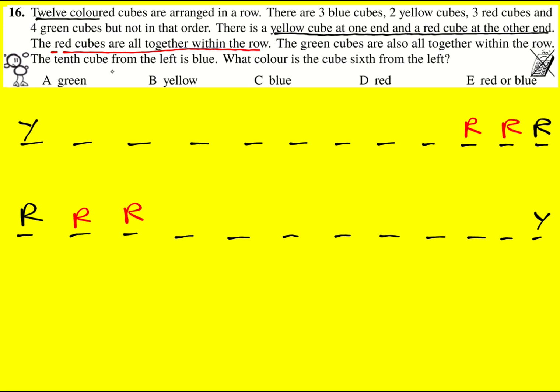And the tenth cube from the left is blue. One, two, three, four, five, six, seven, eight, nine, ten. Okay, this is not possible, this scenario, because I've got a red cube there and a blue cube there, which I can't have. So it must be that actually it's this setup with reds on the left, and blue is here.